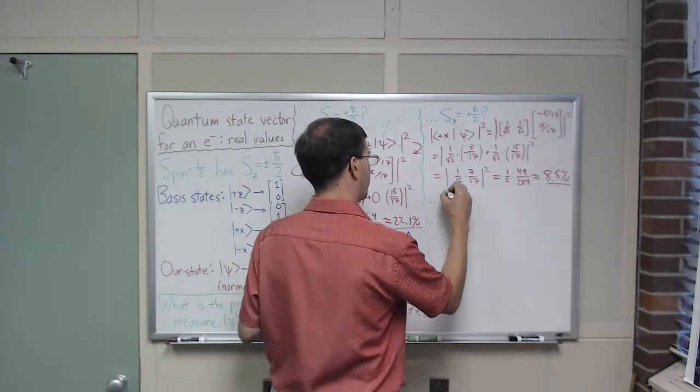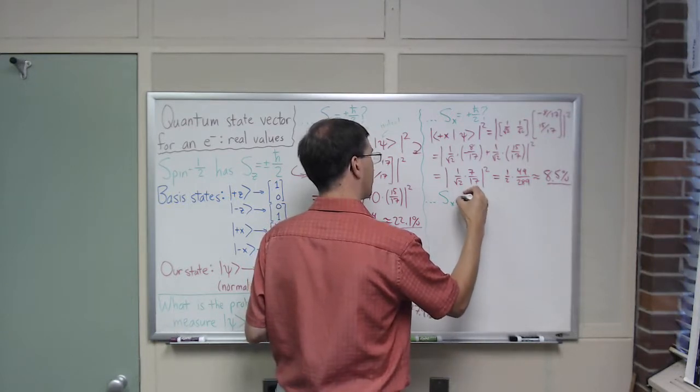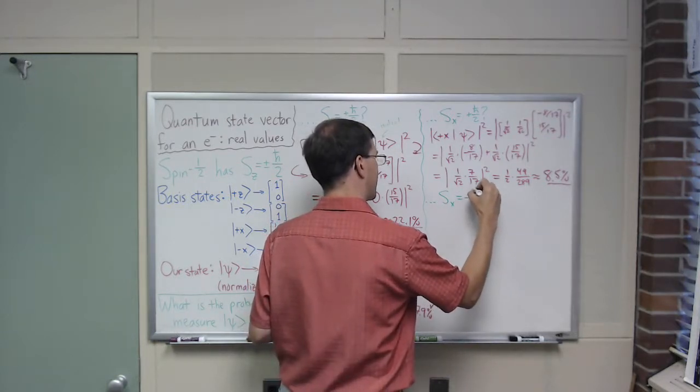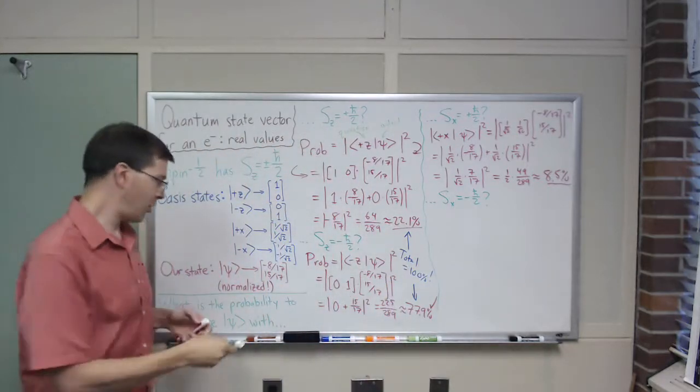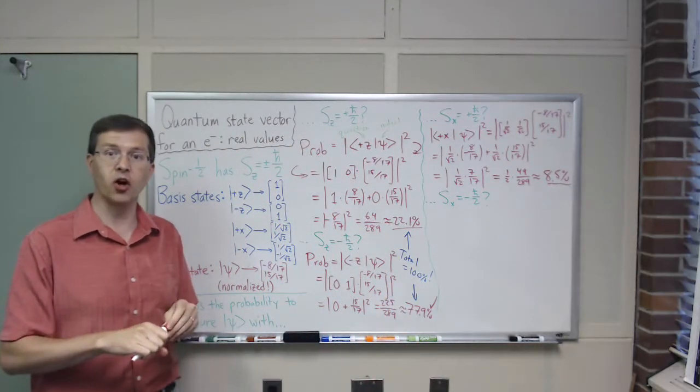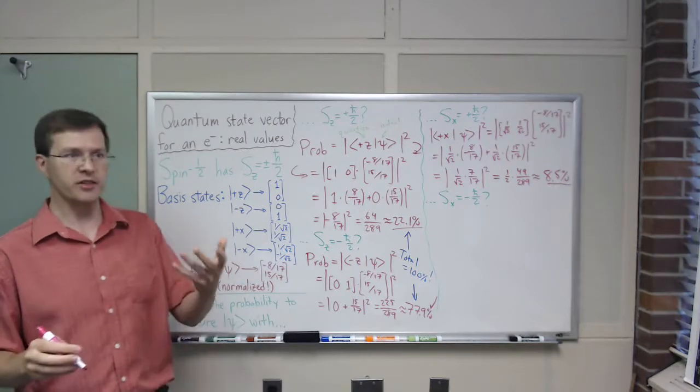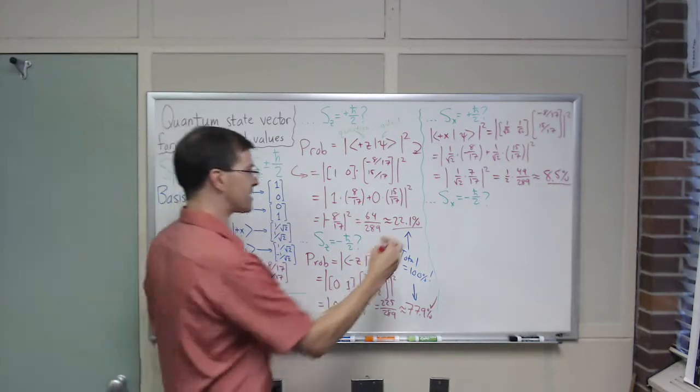Again, you could just subtract from 1 or 100 percent to find what the other probability is, but I like the double check, it's actually really helpful to me to do the double check. What if we ask, what's the probability that sx equals minus h bar over 2. And I'm going to do the same thing. Hopefully you know the drill by this point. If you want to work along at home and try this, go ahead, pause for a second, go through this thing, but let's see it.